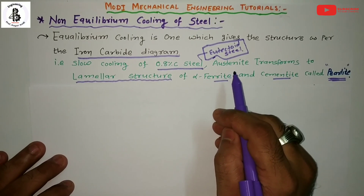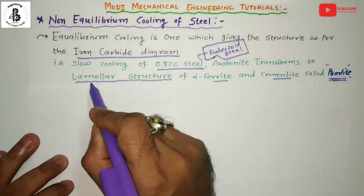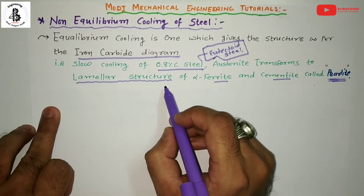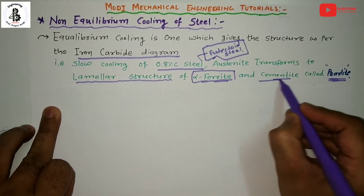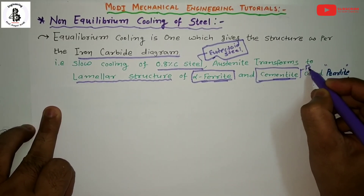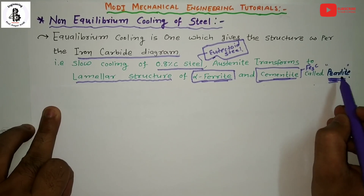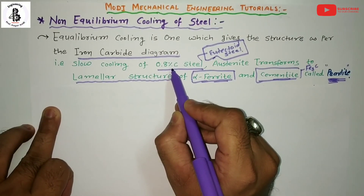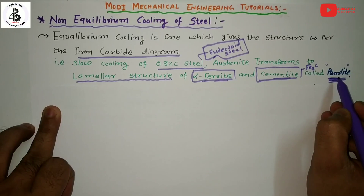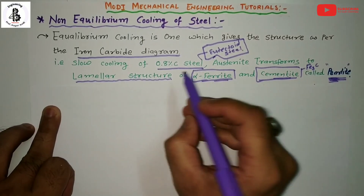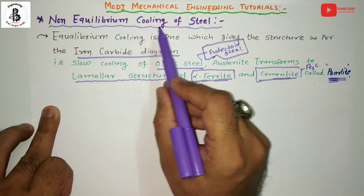During the eutectoid transformation of steels, the austenite phase transforms into a lamellar structure — alternate layers, or simply a perfect mixture of alpha ferrite and cementite (Fe3C) — known as a pearlitic structure. Pearlite is only found when 0.8% carbon is present in the steel. This transformation is austenite to pearlite, and pearlite is only formed at 0.8% carbon with equilibrium cooling.